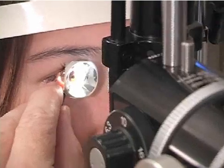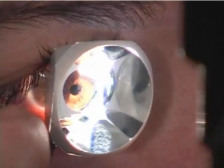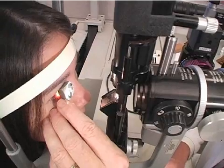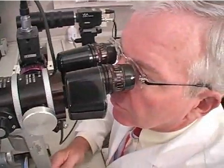This lens is held between the thumb and index finger. The remaining fingers are used to brace the hand against the patient's cheek. This will steady the hand and allow the examiner to keep up with any small patient movements.